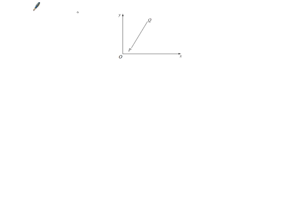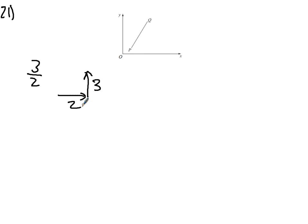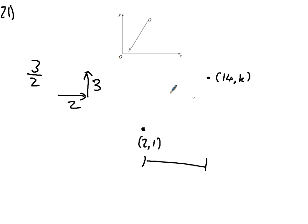Question 21 - always a tough one with graph questions. The information we have is the gradient is 3 over 2. What that actually means is the bottom number is the x move, so as you move 2 across, you move 3 up on the y. Point P is at (2,1) and we've got a point Q somewhere around (14, K). We know we've moved across from 2 to 14, so we've moved 12 across.